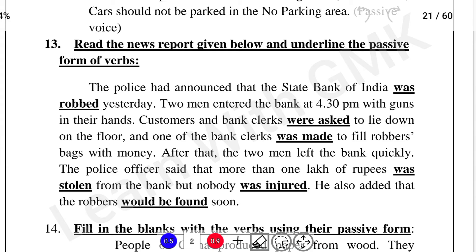Read the news report given below and underline the passive form of the verb. The police had announced the State Bank of India was robbed yesterday — 'was robbed' is passive form. Two men entered the bank at 4:30 pm with guns. Customers and bank clerks were asked to lie down on the floor and one of the bank clerks was made to fill the robbers' bags with money. The police officer said more than 1 lakh rupees was stolen from the bank but nobody was injured — 'was stolen' and 'was injured' are passive forms. He also added that robbers would be found soon — passive form.